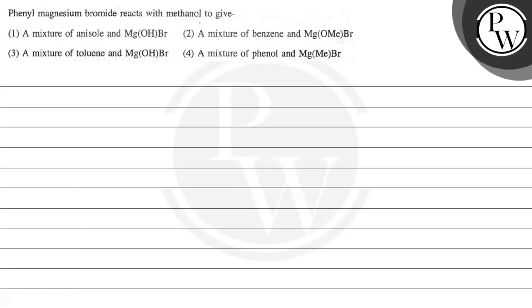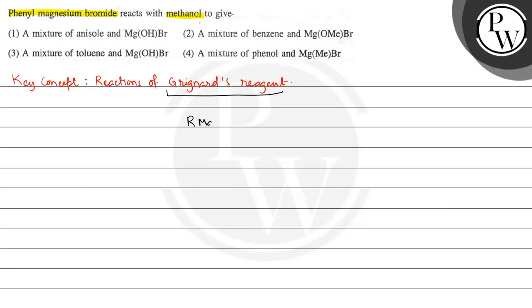Let's read this question. The question says phenyl magnesium bromide reacts with methanol to give — and we have four options. The key concept here is reactions of Grignard's reagent. Grignard's reagent is alkyl magnesium halide, RMgX. RMgX provides R⁻ ion in the reaction. This R⁻ ion can act as a good nucleophile, but it can also act as a strong base.